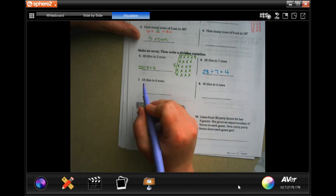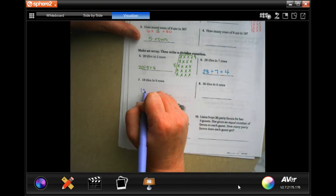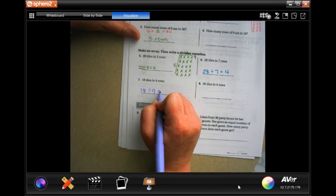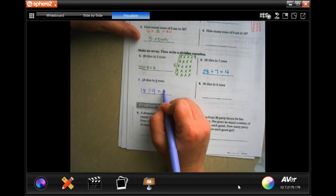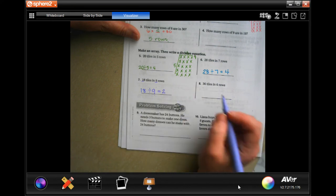Okay, one more. 18 divided by nine. I'm just using the numbers they give me and nine times two is 18. Okay, you guys go ahead and do number eight.